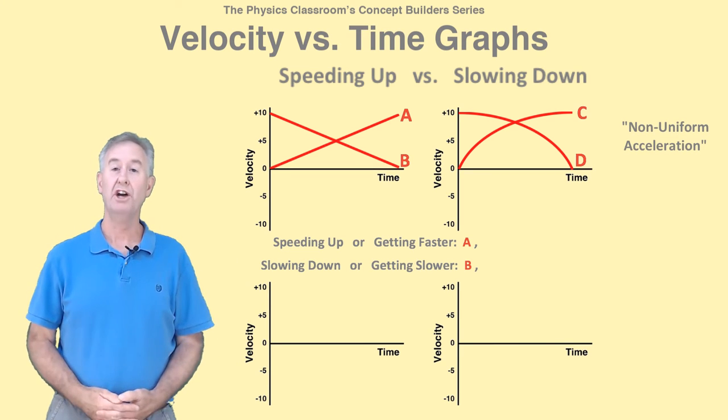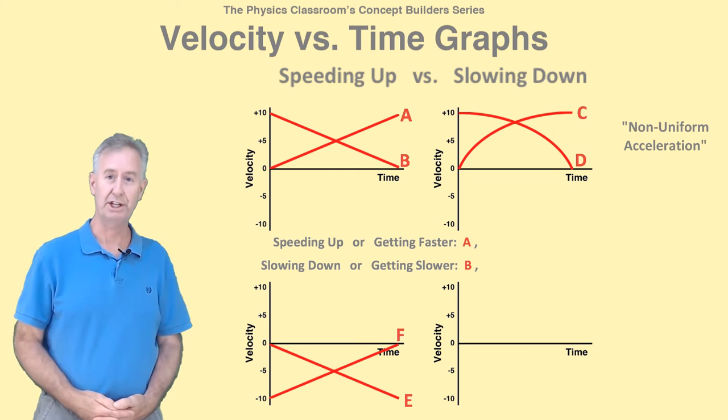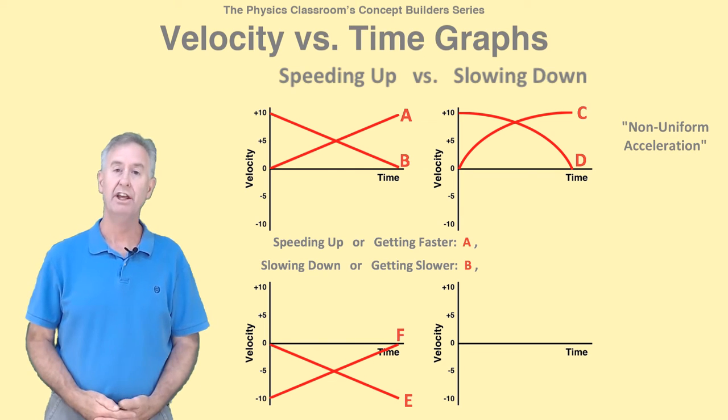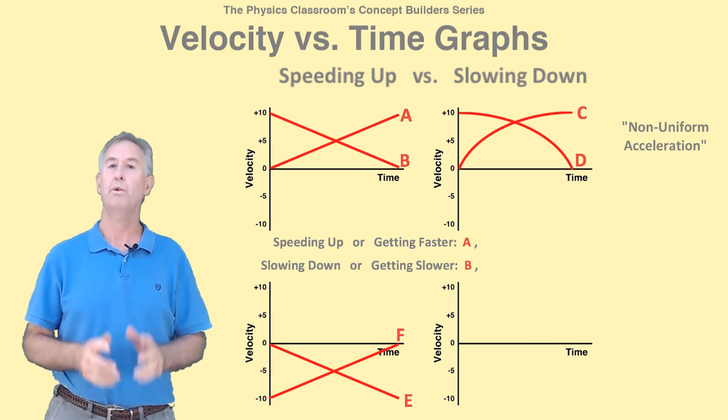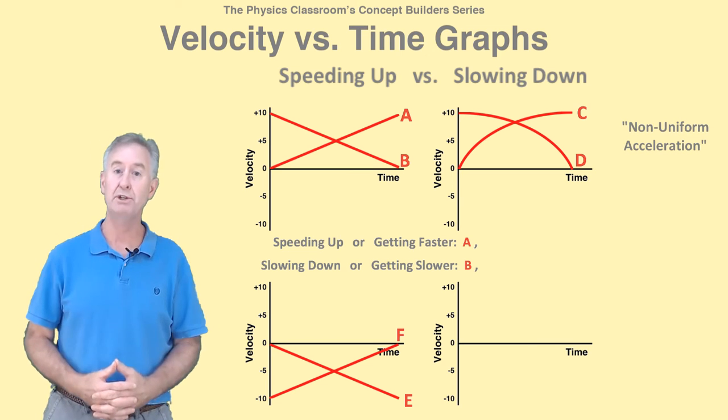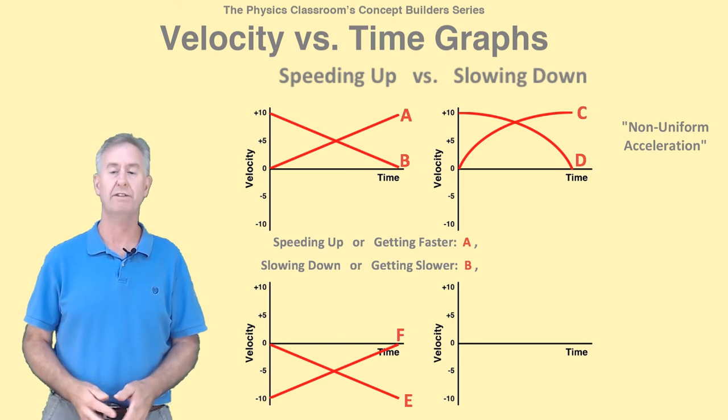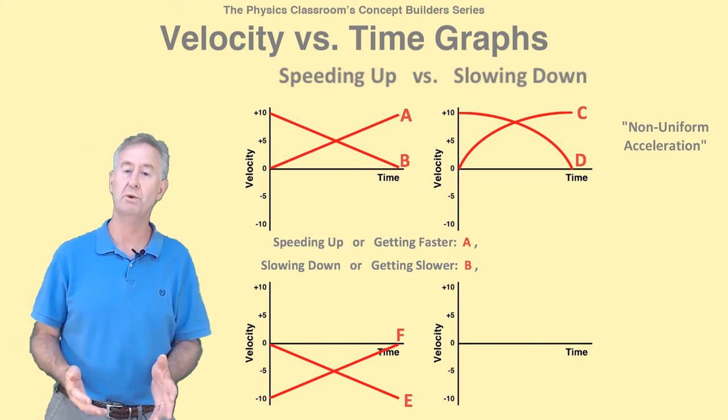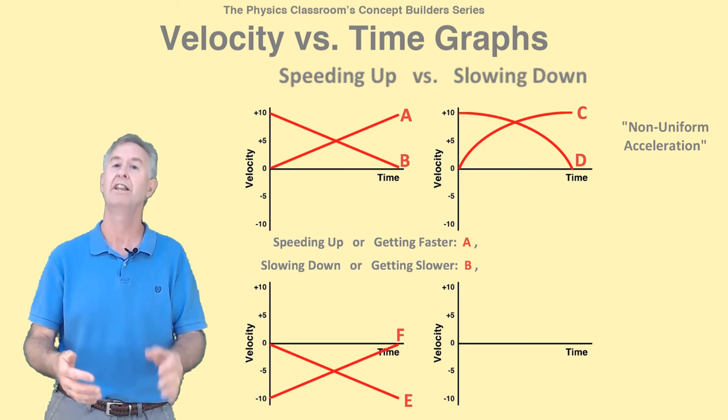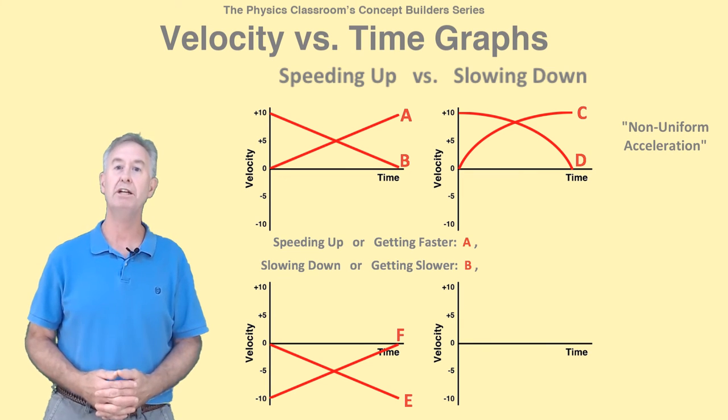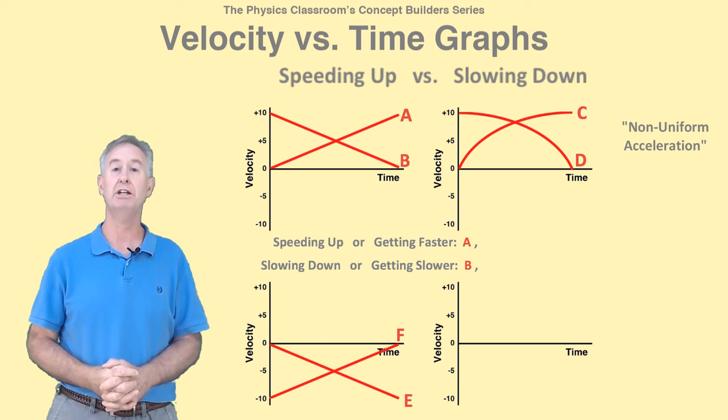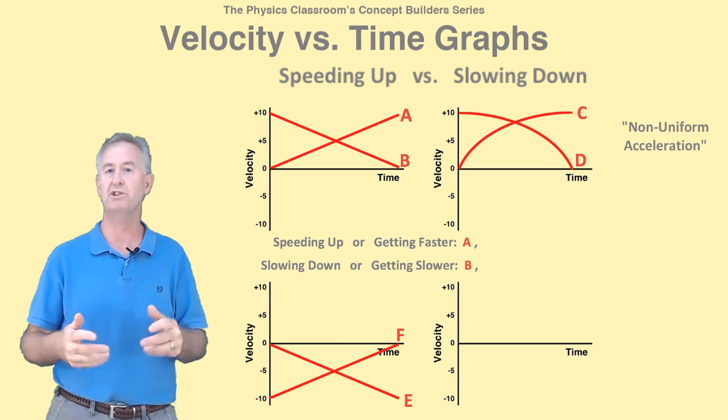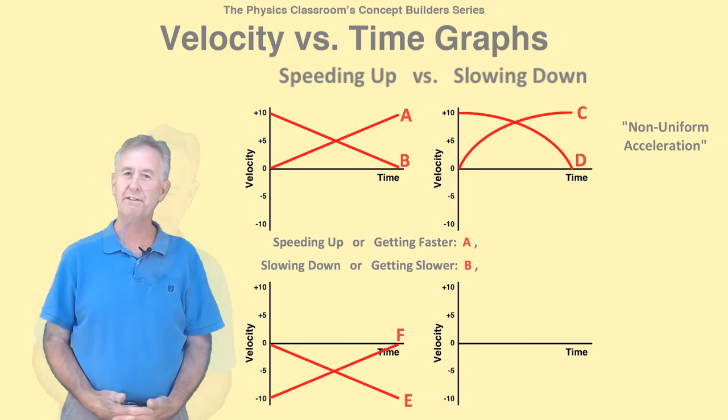Once more, caution is required when the lines are in the negative region. The negative here indicates a direction. Negative 10 meters per second does not mean 10 meters per second less than zero. Rather, the negative indicates that the object is moving in the negative direction—to the left, or downwards, or westward, or however you've defined the negative direction. So negative 10 meters per second is correctly interpreted as moving at a speed of 10 meters per second in the negative direction, such as to the left. Given this reasoning,